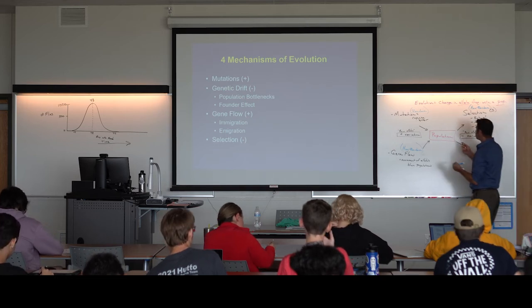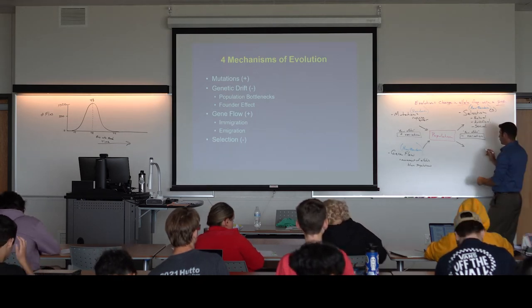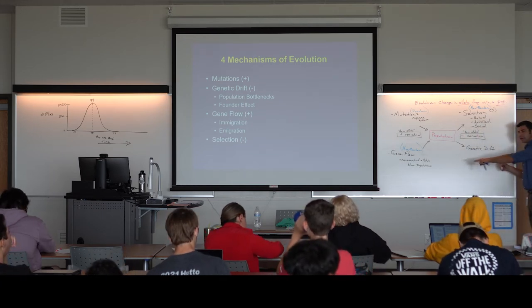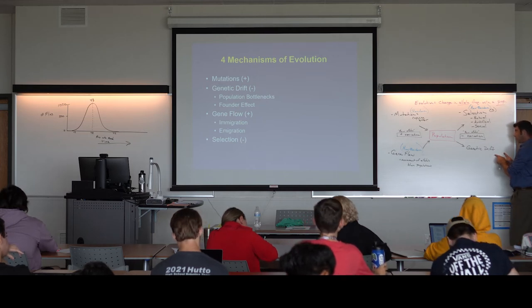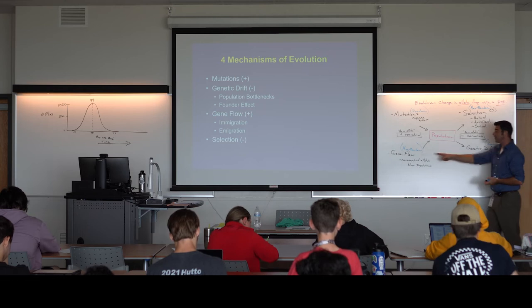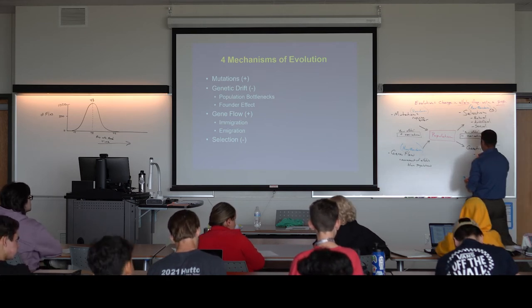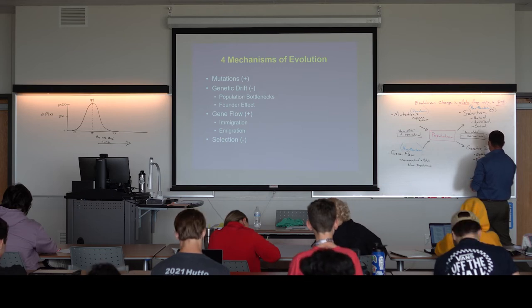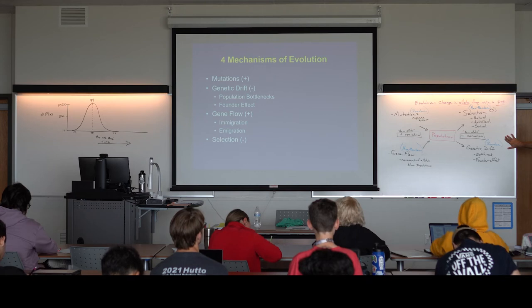The last force is genetic drift — this reduces variation in a random way, making it the counterpart to gene flow which increases variation in a non-random way. The large-scale examples of genetic drift are called a population bottleneck and a founder effect — both examples in which a large amount of variation is lost randomly.